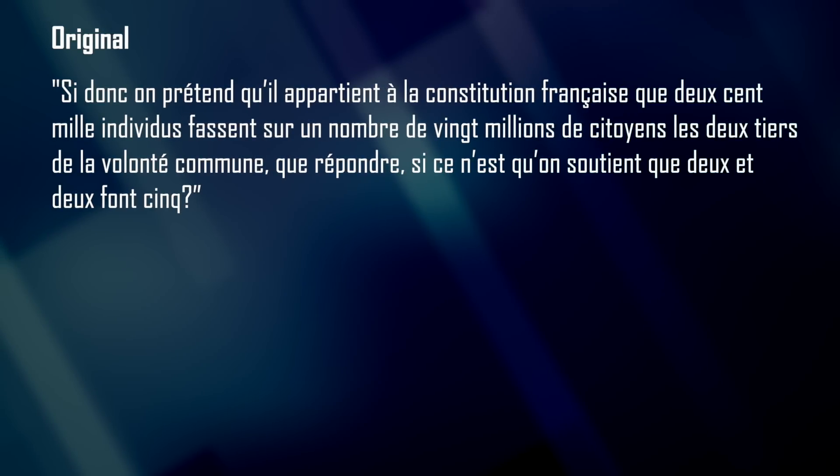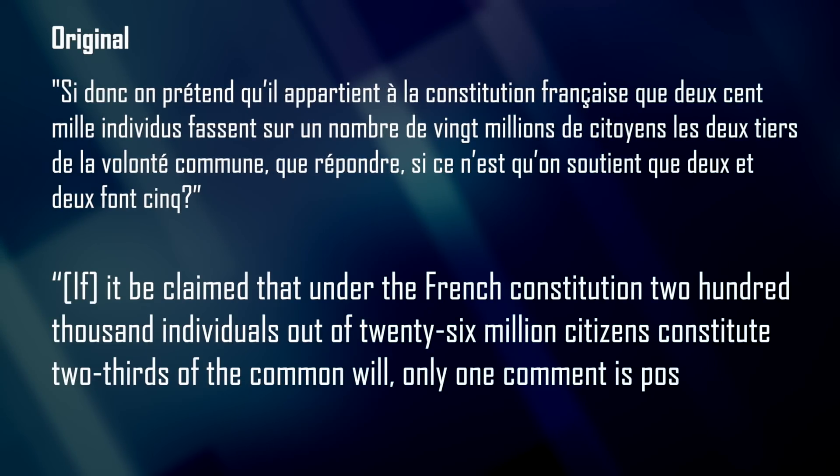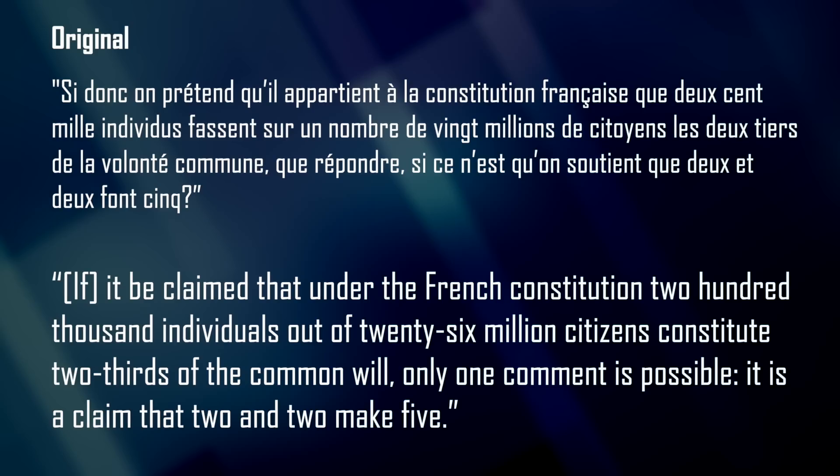George Orwell famously used 'two plus two equals five' in his novel 1984 as an example of an obviously false statement that you can nevertheless make people believe in. The same example was used already in 1789 by the French priest and writer Emmanuel Sieyès in his essay 'What is the Third Estate?' Sieyès wrote: 'If it be claimed that under the French constitution two hundred thousand individuals out of twenty-six million citizens constitute two-thirds of the common will, only one comment is possible: it is a claim that two and two make five.'